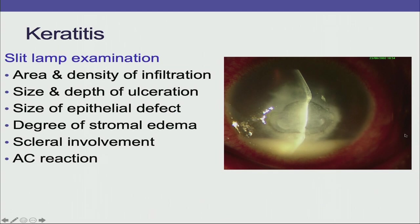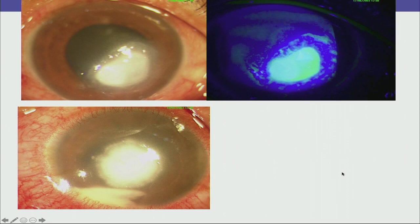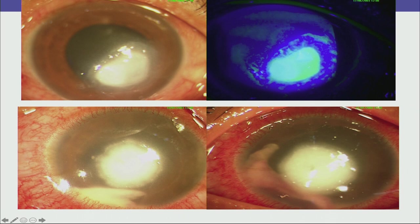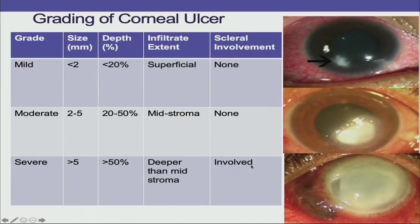Slit lamp evaluation is mainly to know the area and density of infiltration, the size and depth of ulceration, the size of the epithelial defect, the degree of stromal edema, scleral involvement, and anterior chamber reaction. Each time the patient comes, you must monitor not only the epithelial defect but also the size of the infiltration. When the patient changes position, you can see a change in the hypopyon — mobile hypopyon is typical of bacterial keratitis, while static hypopyon is more often seen in fungal keratitis.